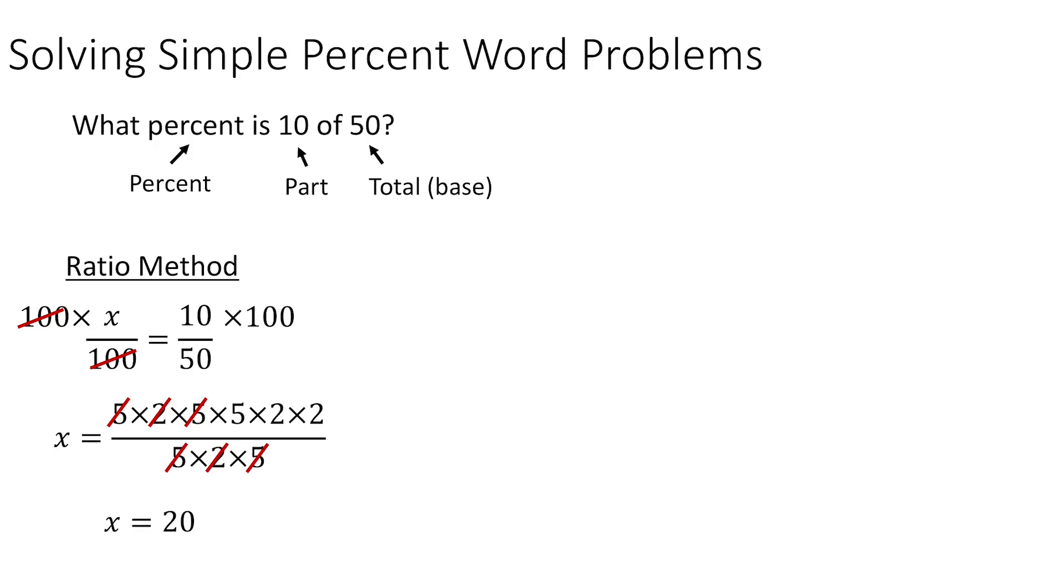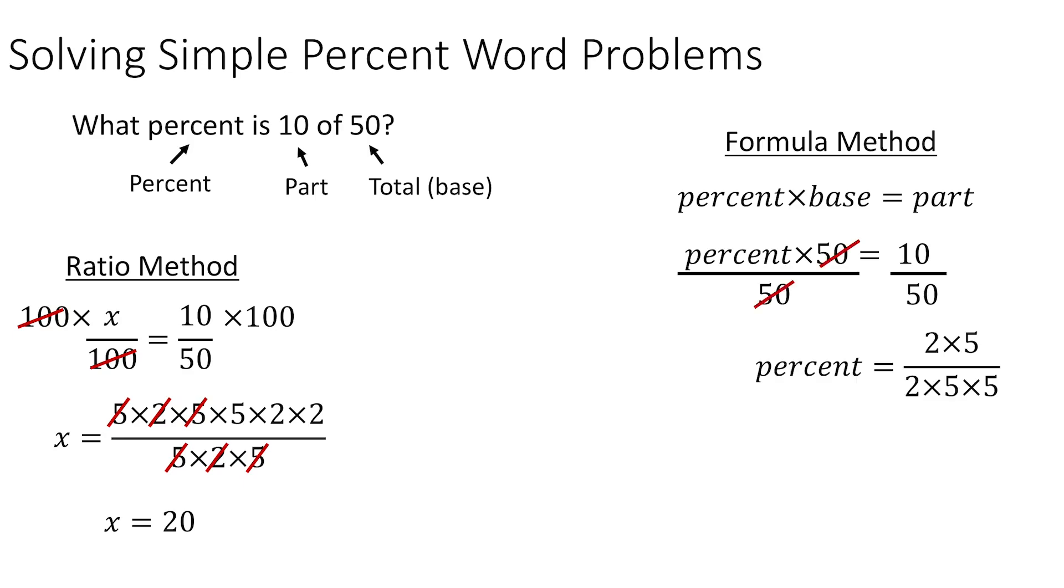Looking at the formula method, the percent times the base is equal to the part. So the percent is unknown here. So the percent times 50 is equal to 10. So we're going to divide both sides by 50. And so our percent is equal to 10 over 50, which is 1 over 5, or in this case, 0.2.